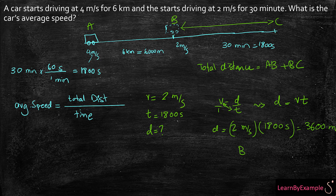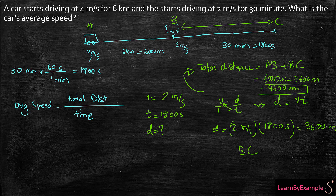So 3,600 meters is my distance from B to C. In order to find my total distance, going back to this equation: my total distance equals AB, which is 6,000 meters, plus 3,600 meters, which equals 9,600 meters. So this is my total distance.